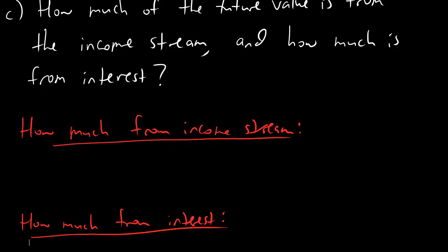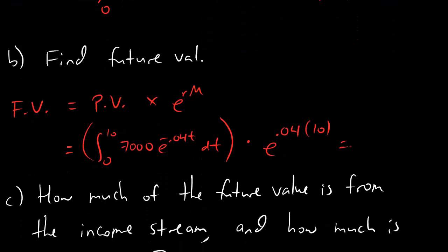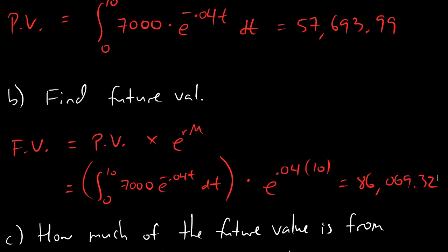Let's go ahead and get numbers. For the present value, we're looking at something like $57,693.99. For the future value, we're looking at something like $86,069.32. These are our present values and future values.